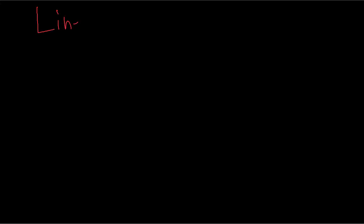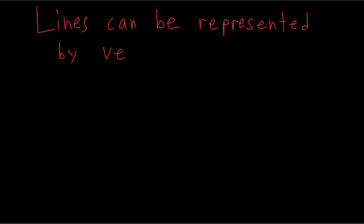We all know how to write the equation of a line in two-dimensional space. We just need the slope of the line and a point, and then we can use point-slope form. But how do we write the equation of a line in three-dimensional space?